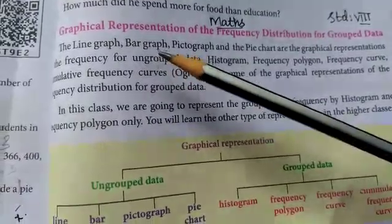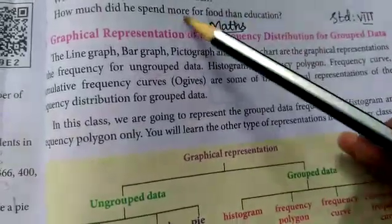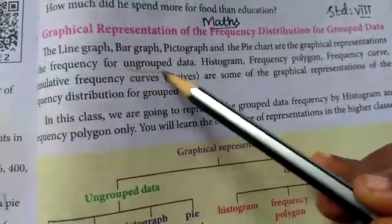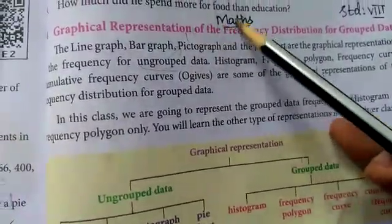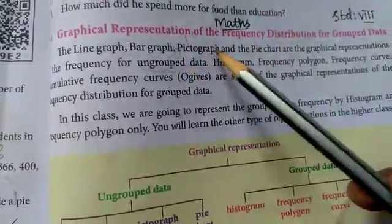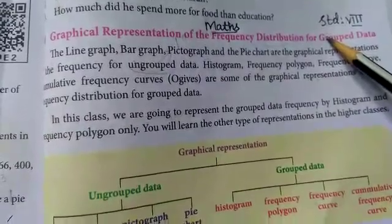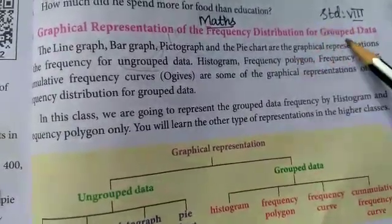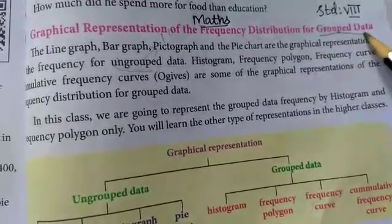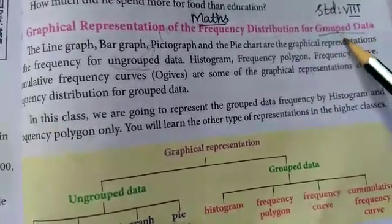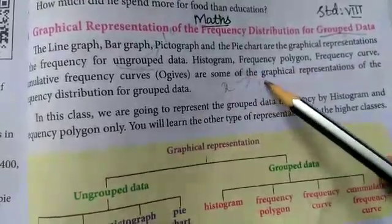Ungrouped data can assume only whole numbers and exact measurements. For example, the values on the x-axis for ungrouped data must be whole numbers like 10, 20, 30, etc. For grouped data, any value within a certain interval is used — it is continuous data. Grouped data is otherwise known as continuous data.